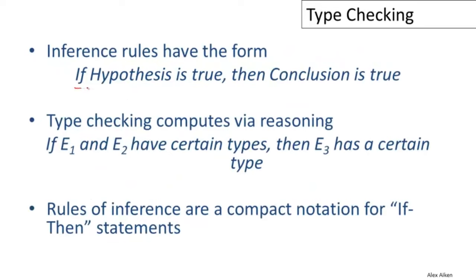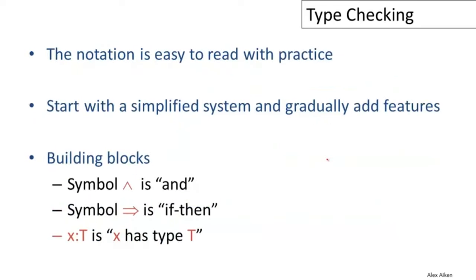Inference rules are logical statements of the form: if some hypothesis is true, then some conclusion is true. In type checking, typical reasoning is: if a couple of expressions have certain types, then some other expression is guaranteed to have a certain type. Inference rule notation is a compact way of encoding these if-then statements. It will be unfamiliar if you haven't seen it, but is quite easy to read with practice.